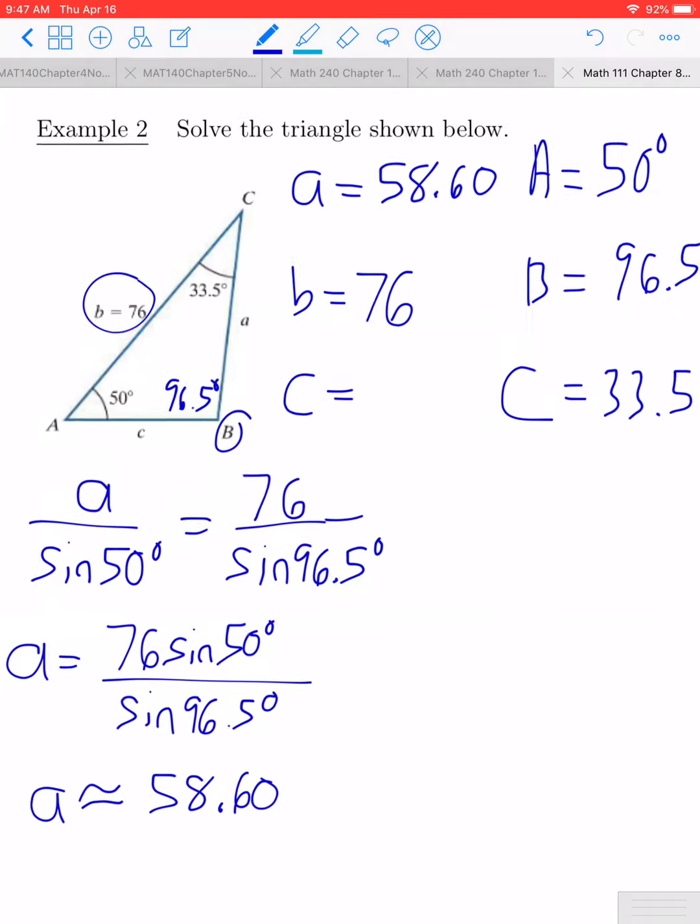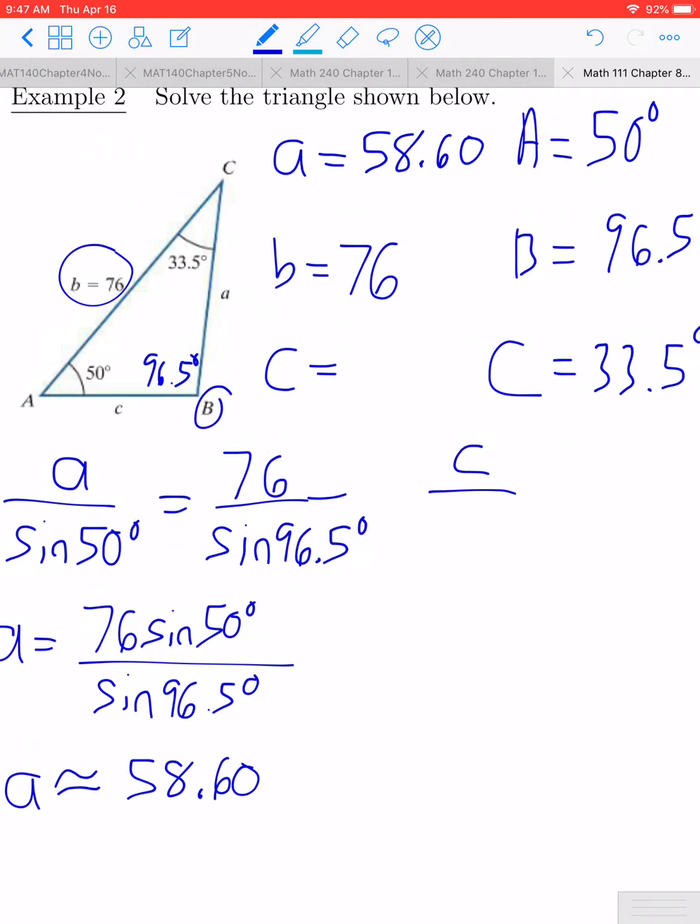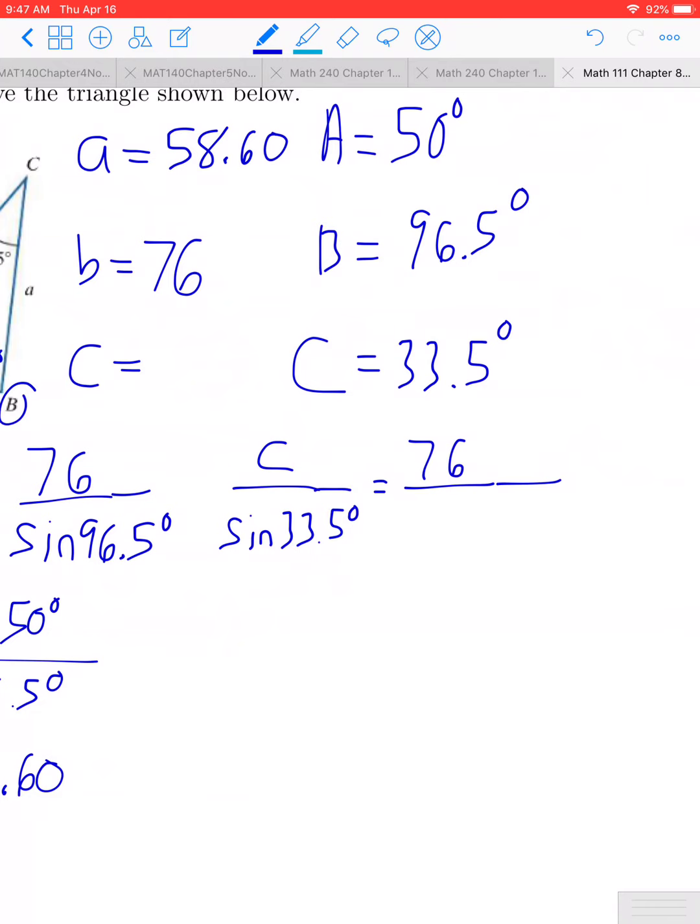We can set up a similar ratio to solve for side C. The ratio of C divided by the sine of angle C should be equal to the length of side B divided by the sine of angle B. To solve for C, multiply both sides by sine 33.5 degrees. We get 76 times the sine of 33.5 degrees divided by the sine of 96.5 degrees.